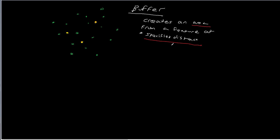The way that we do that is we take that something, we do what's called a buffer — we create an area from that feature — and then we look at what was overlapped by that new area. I think some examples might help here.